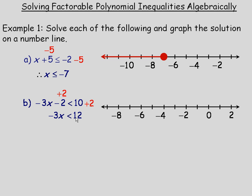When you divide or multiply both sides of an inequality by a negative number, the direction of the inequality changes. For example, 2 is less than 5. If I multiply both sides by negative 1, I get negative 2 on the left and negative 5 on the right, and the correct sign is greater than — because negative 2 is greater than negative 5. So multiplying by a negative value reverses the inequality direction.